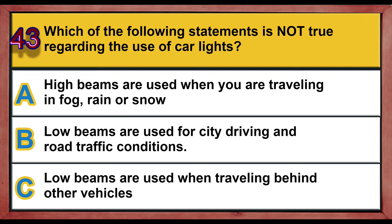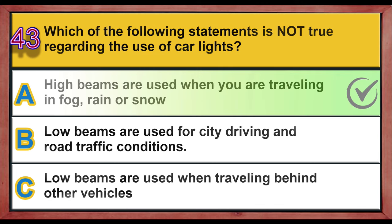Question 43. Which of the following statements is not true regarding the use of car lights? A. High beams are used when you are traveling in fog, rain or snow. B. Low beams are used for city driving and road traffic conditions. C. Low beams are used when traveling behind other vehicles. Correct answer is A: High beams are used when you are traveling in fog, rain or snow.